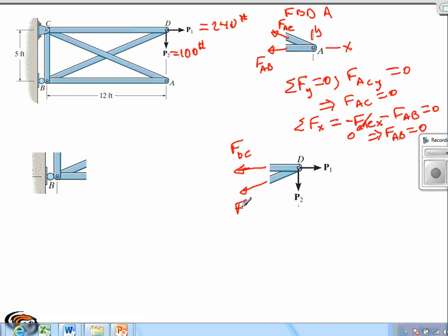The angle that this member makes is going to be a 5, 12, and 13 angle which is the angle of our force here. So we still have the 240 pound force acting horizontally and the 100 pound force acting vertically.